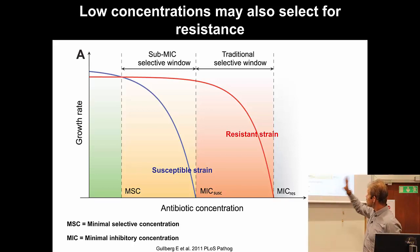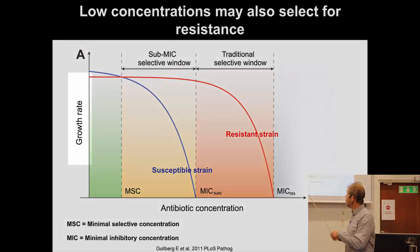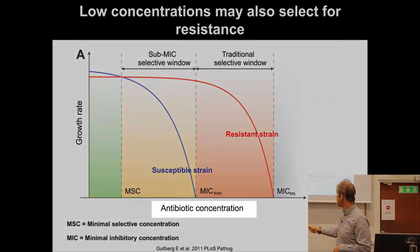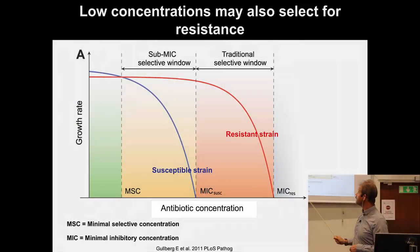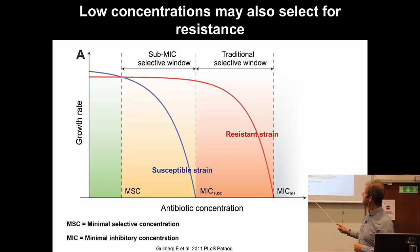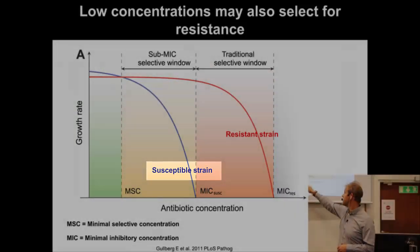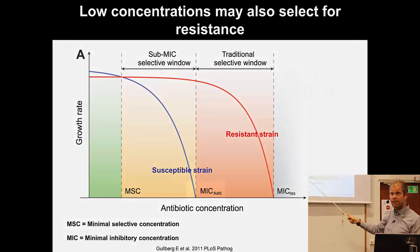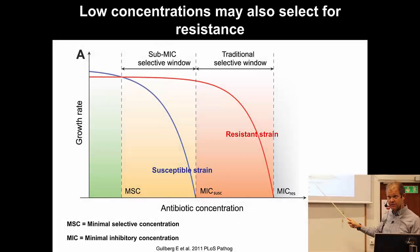This is a conceptual picture that I'll try to explain. Here we have growth rate of bacteria — how fast they grow — and this is how much antibiotic there is. You have a blue and a red line representing strains of bacteria. The blue is sensitive to antibiotics, so when you increase antibiotic concentration it doesn't grow very well and eventually doesn't grow at all. This is what we call the minimal inhibitory concentration on the susceptible strain — when it completely stops growth.